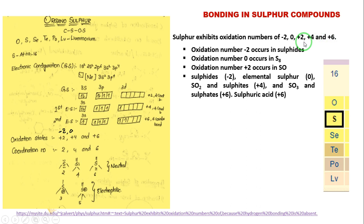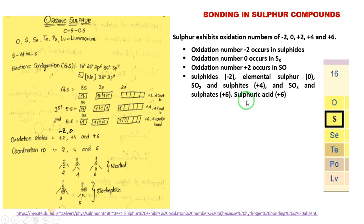Generally, the oxidation number 0 exists in elemental sulfur, which is S₈. The oxidation number +2 generally occurs in sulfur monoxide and related compounds. Sulfites and SO₂ generally have a +4 oxidation state. Sulfur trioxide, sulfates, and sulfuric acid generally have a +6 oxidation state. In conclusion, sulfur which forms 2, 4, or 6 covalent bonds is in a neutral state, whereas if it forms 3 bonds it gets a positive charge, and if it forms 5 bonds it also gets a positive charge. This concept is very important in mechanisms.